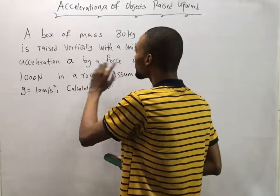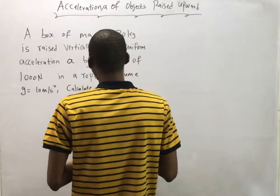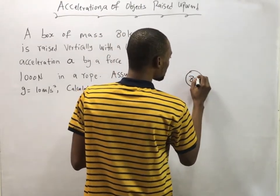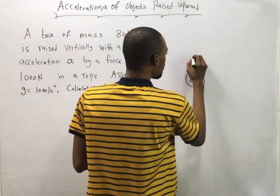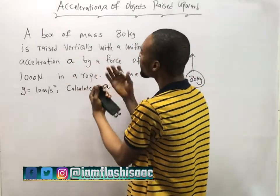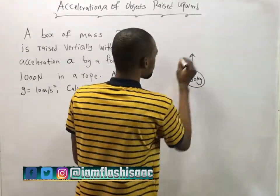Now if you are given a question like this: a box of mass 80 kg is raised vertically. So this is the box and it's 80 kg, it's raised upward vertically with a uniform acceleration by a force of 1000 Newton.